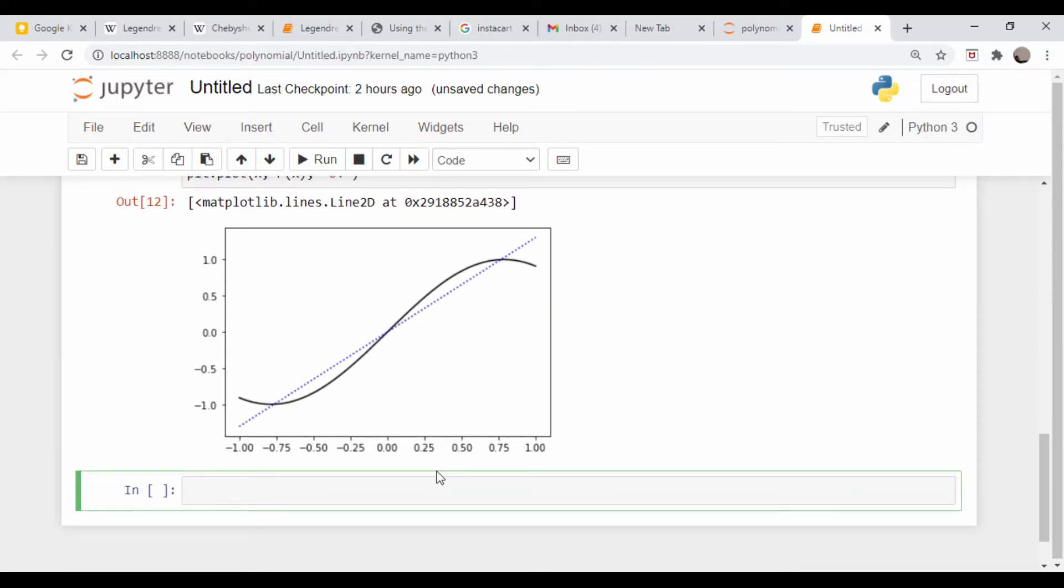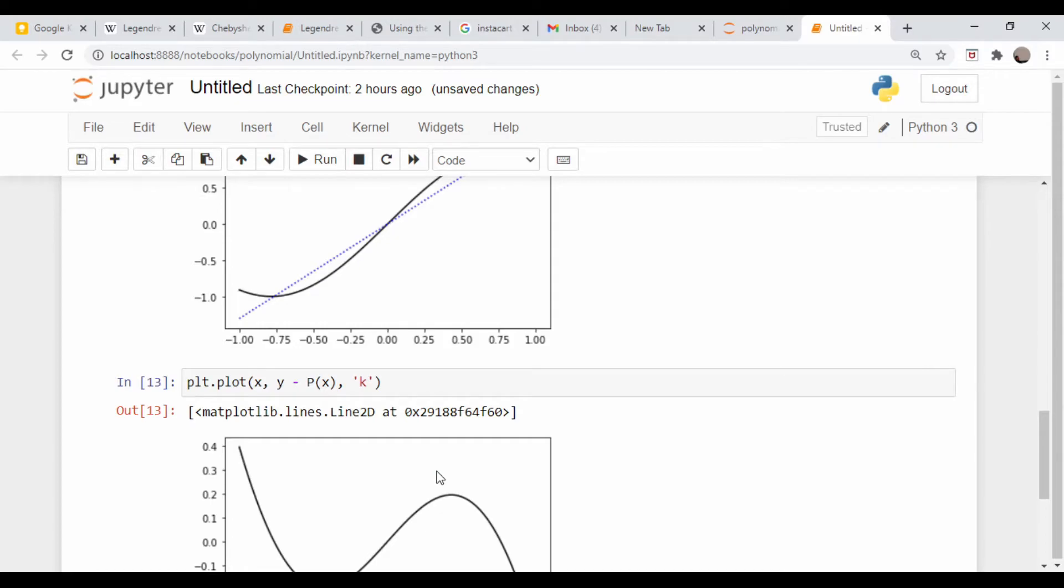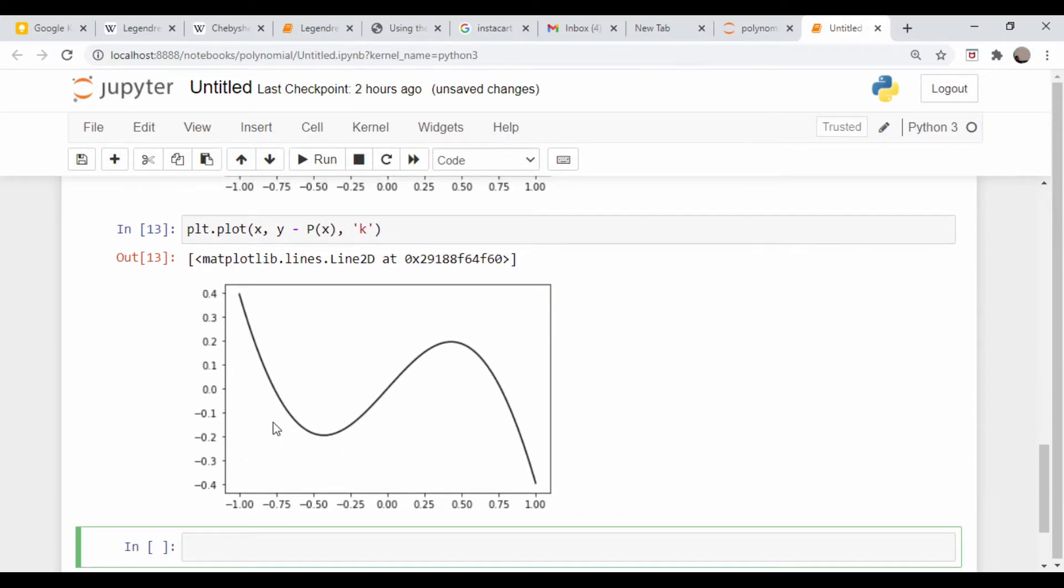So there we go. Linear, that's not a very good approximation. So let's go down here and plot the error: plt.plot x comma our function y, which is sine of 2x, minus our approximation via the Legendre polynomial minus p of x, and make that a black line. So obviously this is not a good approximation at all.